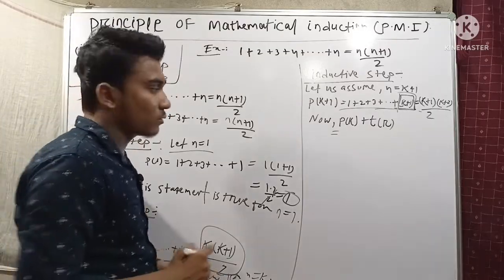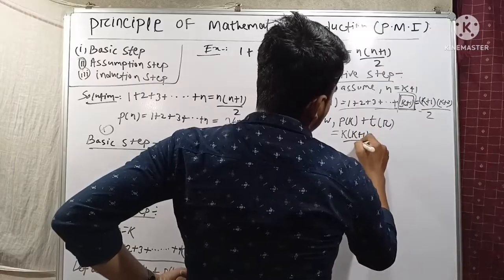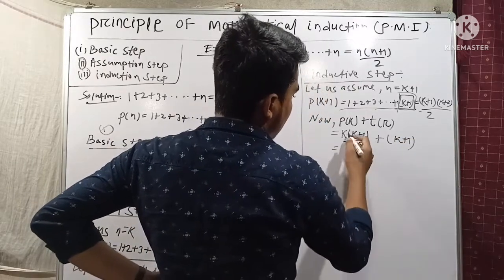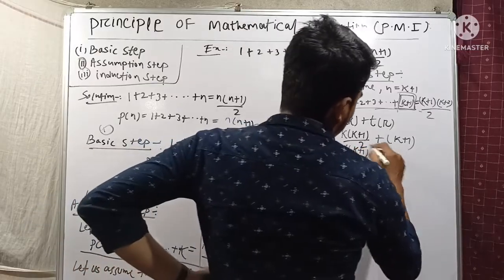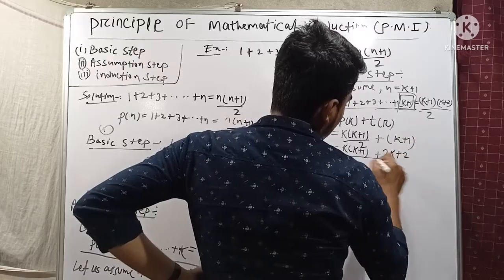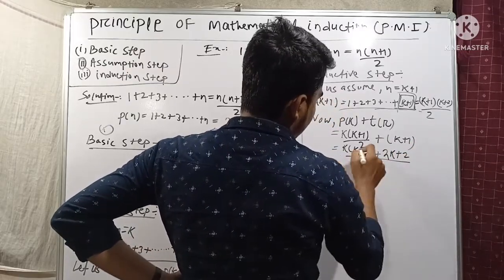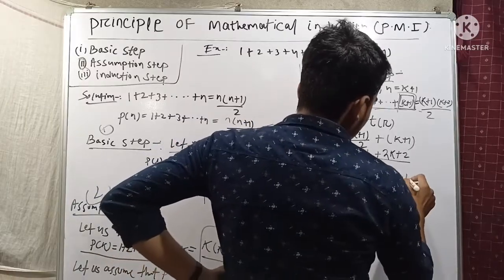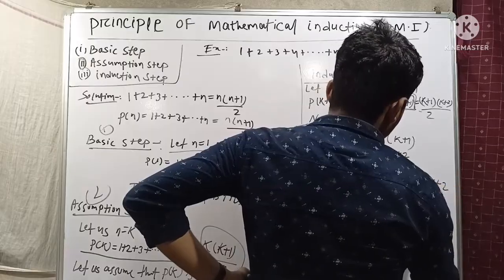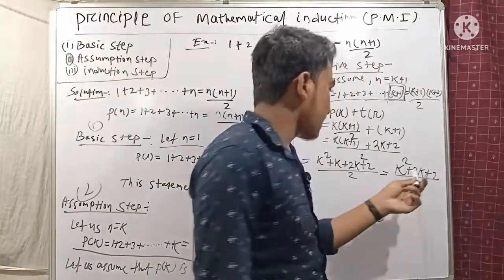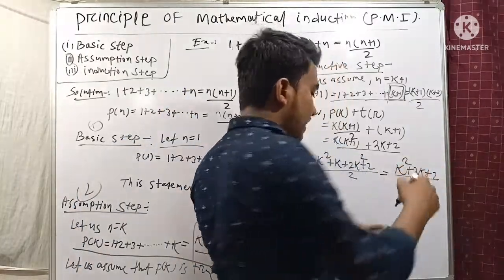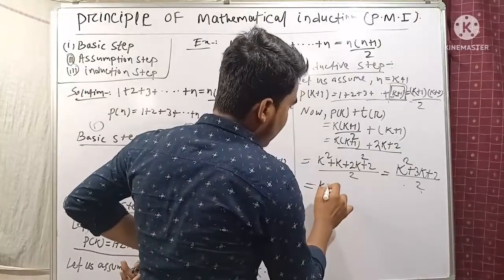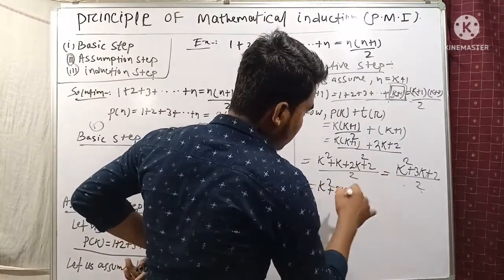P(k) gives us k(k+1)/2. So P(k+1) = k(k+1)/2 + (k+1). Taking common LCM, we get k(k+1) + 2(k+1), all divided by 2. Expanding: k² + k + 2k + 2, divided by 2, equals k² + 3k + 2, divided by 2. Now using middle term split: k² + 2k + k + 2, all divided by 2.